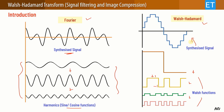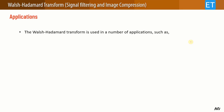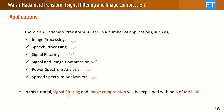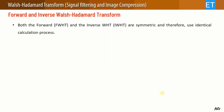The Walsh-Hadamard transform is very popular and has a number of applications, such as image processing, speech processing, signal filtering, signal and image compression, power spectrum analysis, and spread spectrum analysis. In this video tutorial I will explain signal filtering and image compression with the help of MATLAB at the end.